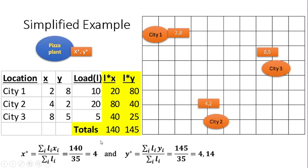So the X coordinate, the X star coordinate is equal to 4, and the Y coordinate is equal to 4.14. So our ideal position, our ideal location on the map would be to place our plant at that position, at that location.